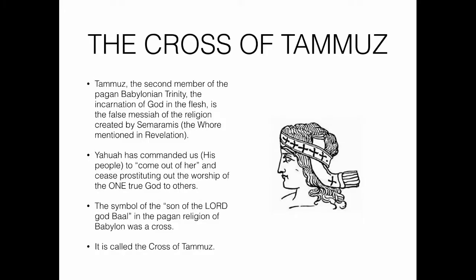Tammuz was the second member of the pagan Babylonian trinity — the incarnation of god in the flesh, the false messiah of the religion created by Semiramis, who is the whore mentioned in Revelation. This false religion is the whore. Yahuwah has commanded us, his people, to come out of her and to cease prostituting the worship of the one true God to others.